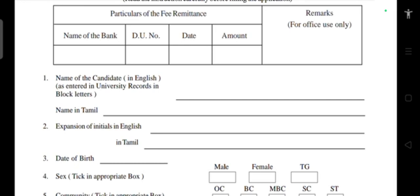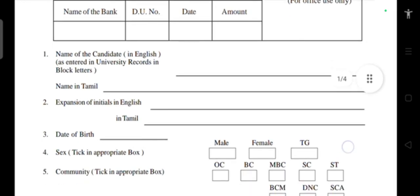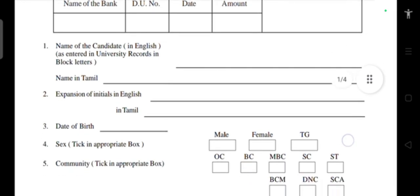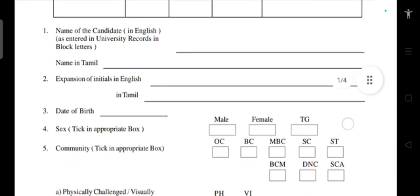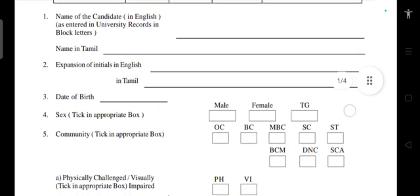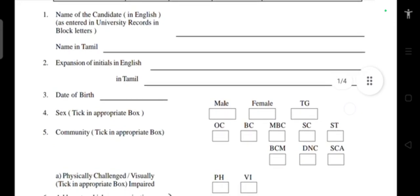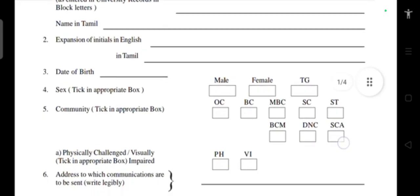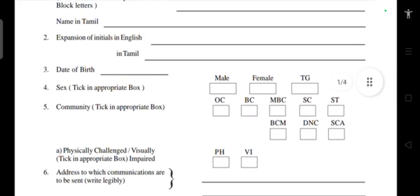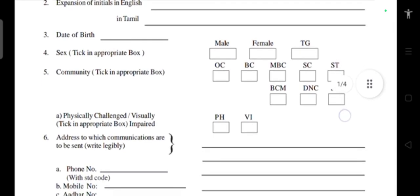The expansion of initials in English means your father's name completely expanded from the initial. Similarly in Tamil, write your father's name in Tamil. Then for date of birth (DOB), write your date of birth clearly.